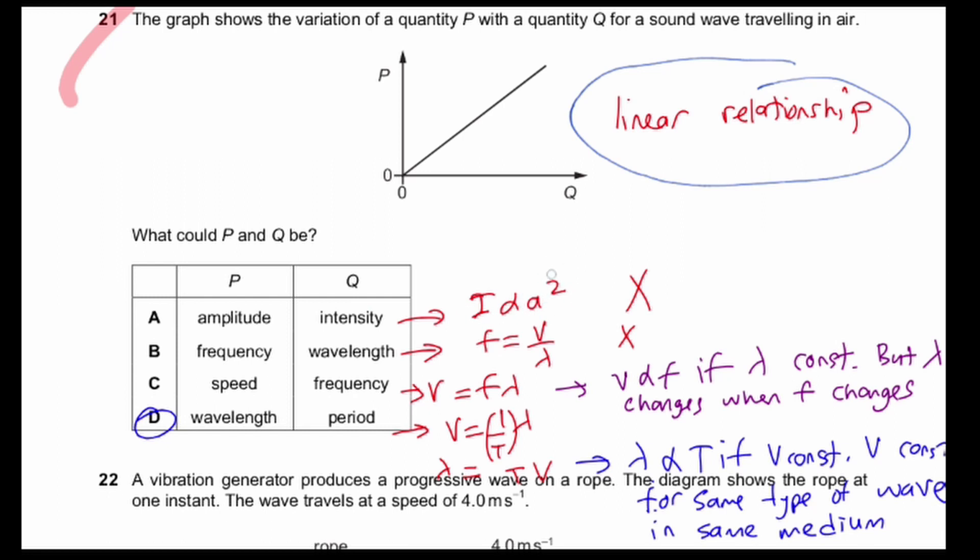There's a square function, which is a quadratic function, so it will be a parabola. So this is wrong.